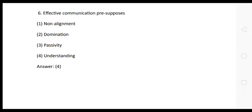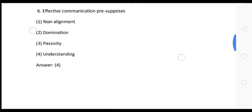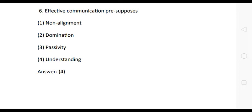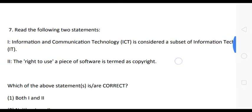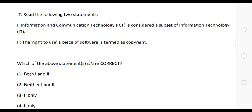Question 6: Effective communication presupposes — options: (1) non-alignment, (2) domination, (3) passivity, (4) understanding. The correct answer is option 4: understanding. Effective communication presupposes understanding — very important question.